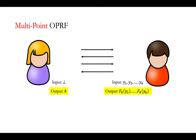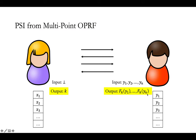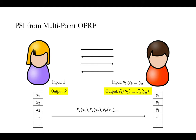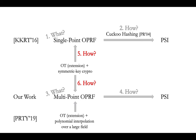If they can achieve multi-point OPRF, where Bob has multiple elements as input, and as the output Bob learns the PRF evaluated on all the elements, then we can achieve PSI very easily. The two parties first run a multi-point OPRF, and then Alice will evaluate the PRF on every element in her set and send all the PRF values to Bob. By comparing these PRF values, Bob can easily figure out the intersection of the two sets. So we have seen how to construct PSI from single-point OPRF using Cuckoo hashing, and how to construct PSI from multi-point OPRF to get rid of the Cuckoo hashing, so we can reduce the communication, especially from Alice to Bob.